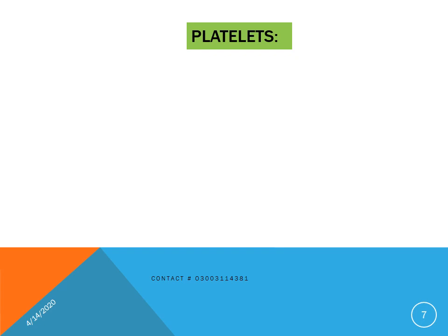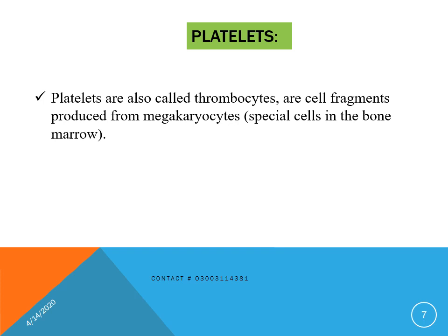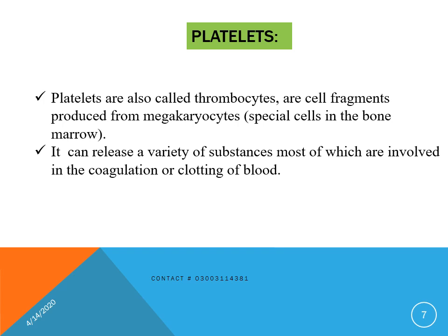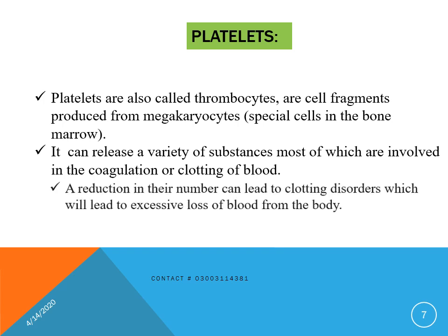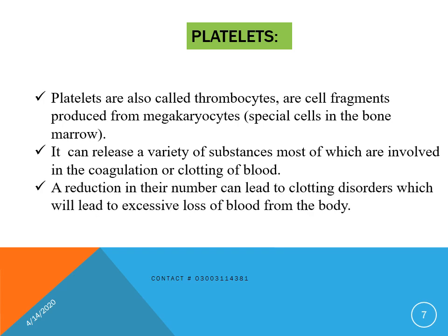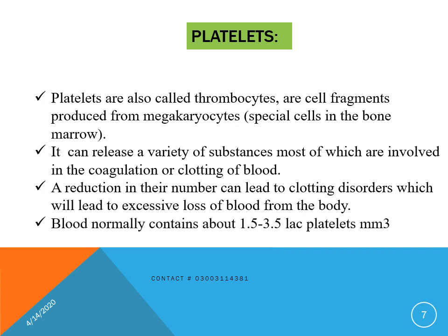Platelets, or thrombocytes, are the third type of blood corpuscles. They are cell fragments produced from megakaryocytes present in the bone marrow. Platelets release a variety of substances, most of which are involved in coagulation or blood clotting. A reduction in their number can lead to clotting disorders, which result in excessive loss of blood from the body. Blood normally contains about 1.5 to 3.5 lakh platelets.